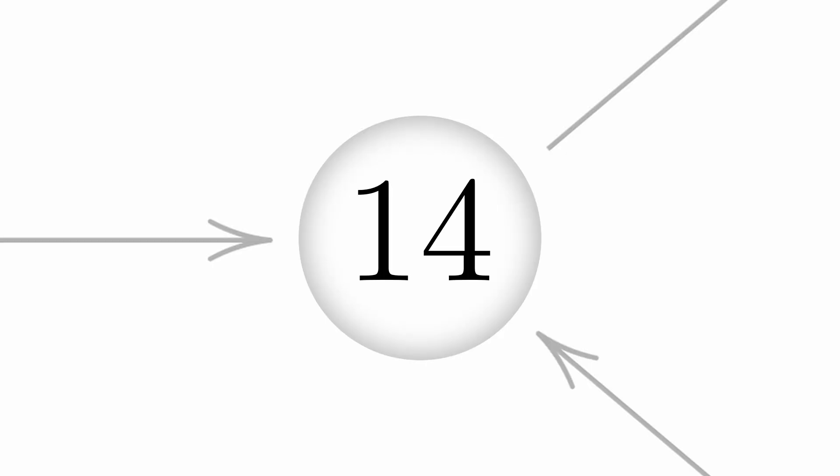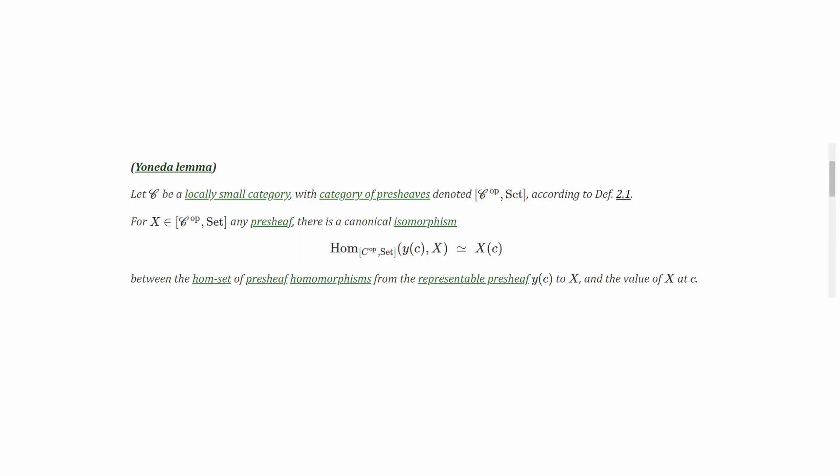Fact 14: There's a thing called the Yoneda Lemma, which says that if you know what a thing looks like from all perspectives, you know what it is. Students can get stuck flip-flopping between believing the Yoneda Lemma is entirely trivial and believing it's the most complex thing they've ever seen.